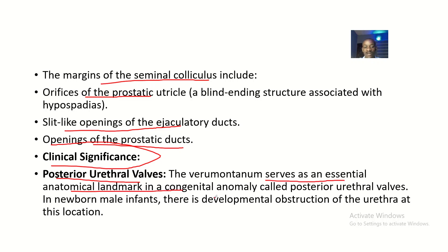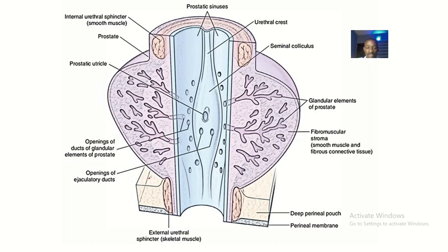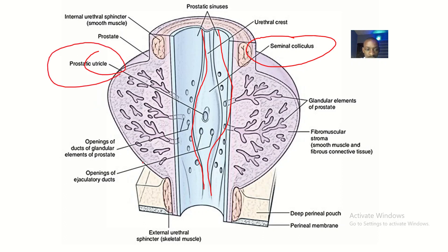Regarding clinical significance: the verumontanum serves as an essential anatomical landmark in a congenital abnormality called posterior urethral valves. In newborn male infants, there is a developmental obstruction of the urethra at this location, causing a membranous obstruction of the urethra at this junction.